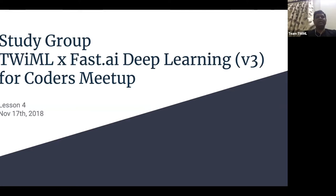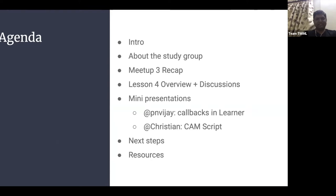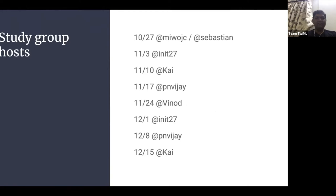Welcome everybody to the fourth meetup on the latest version 3 fast.ai deep learning course. The agenda for the study hour: we start with a recap of what this study group is about, go through what we did in the last meetup, take a high-level overview of lesson four, followed by a couple of mini presentations — one by me and one by Christian — then open discussion.